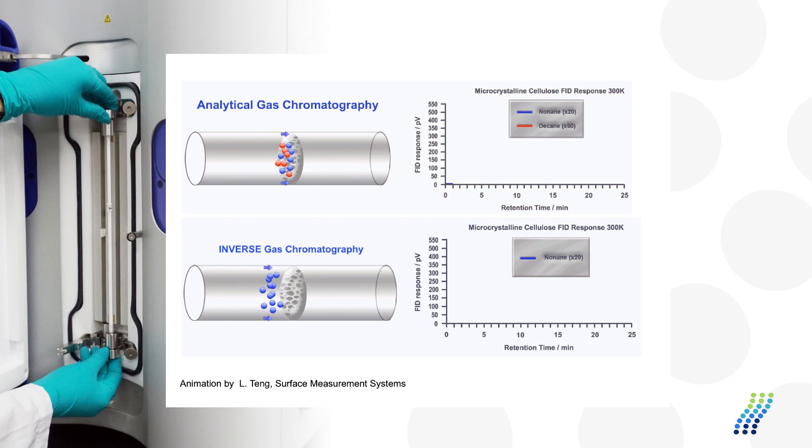So in inverse GC, we have a column, typically a column, it could be a film, it could be a fiber, it could be a granule, there's lots of different morphologies we can work with.